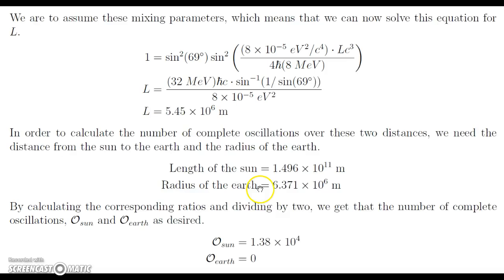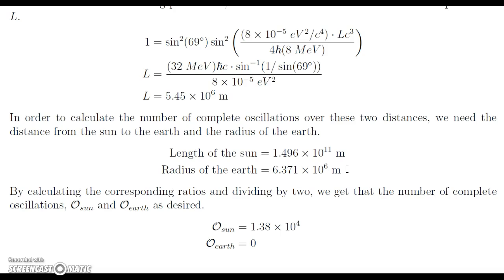Okay, so to complete this problem, we need to calculate the complete oscillations over these two distances. And to do this, we'll need two different distances. We need the distance from the sun to the earth and the radius of the earth. So here we have the length from the sun to the earth. That should be noted here that this is actually the length of the sun to the earth, not just the length of the sun. That is equal to 1.496 times 10 to the 11th meters. The radius of the earth is 6.371 times 10 to the 6th meters.